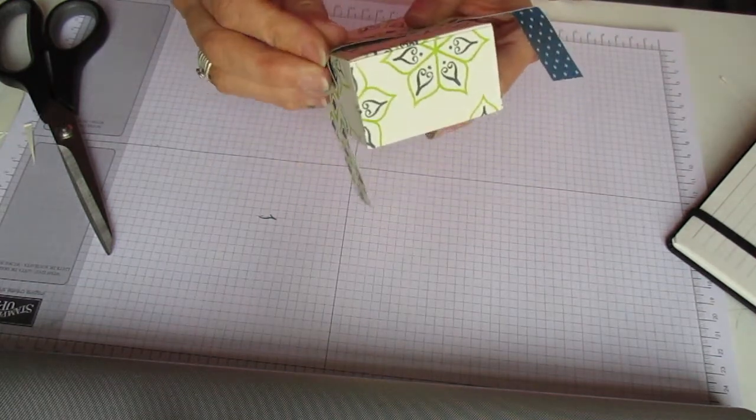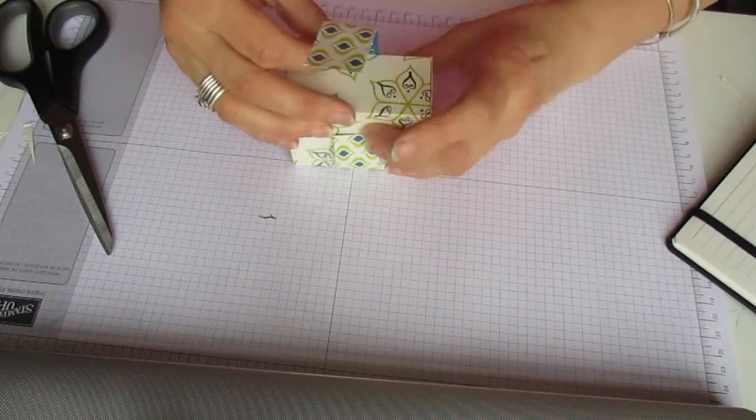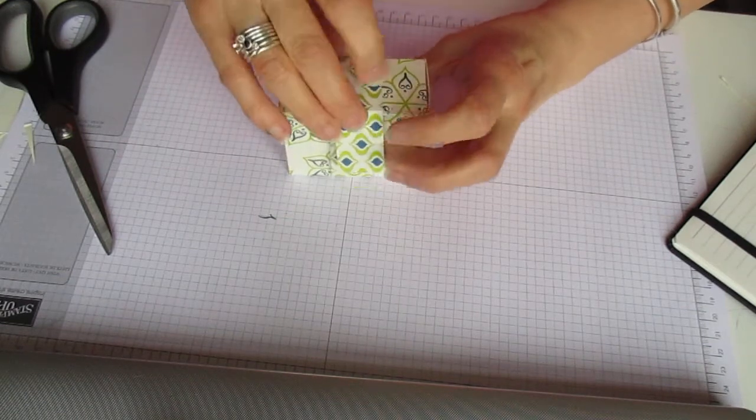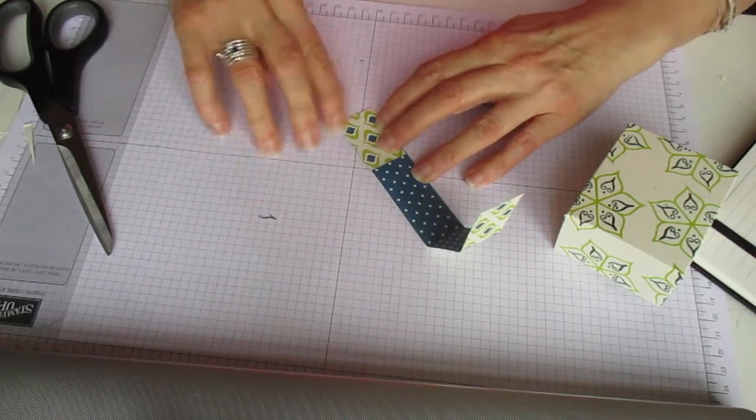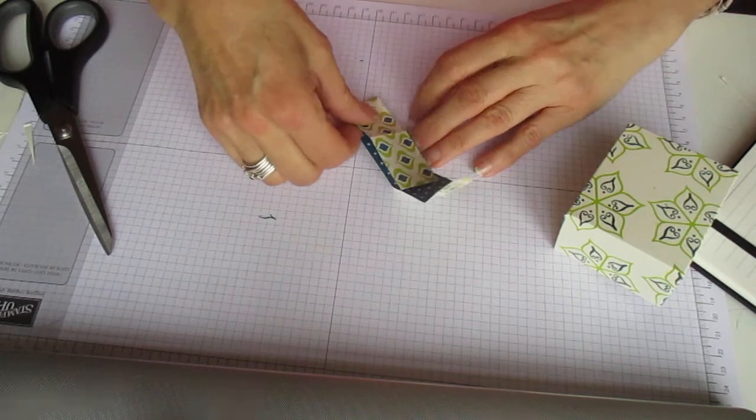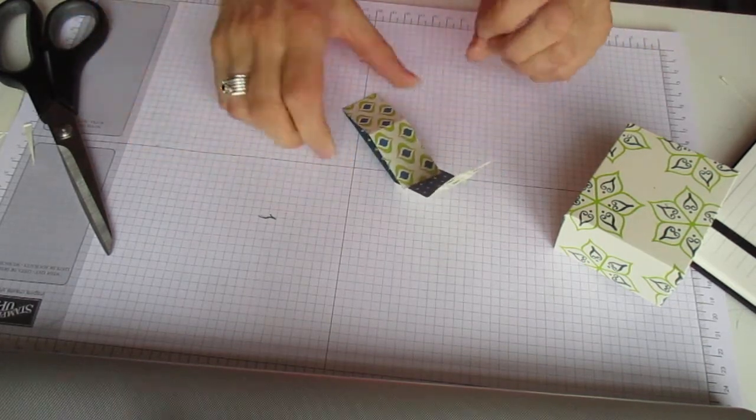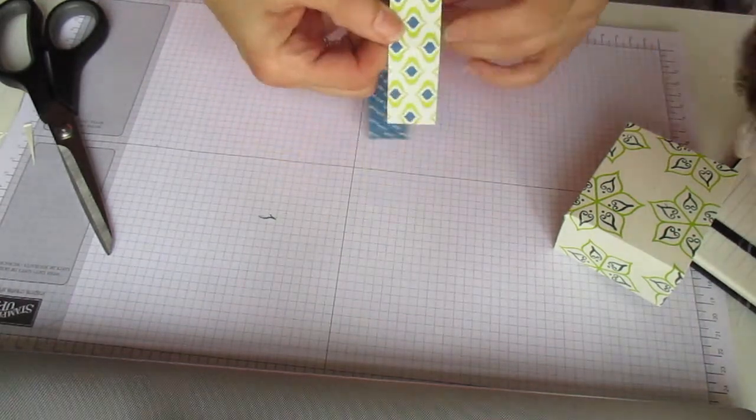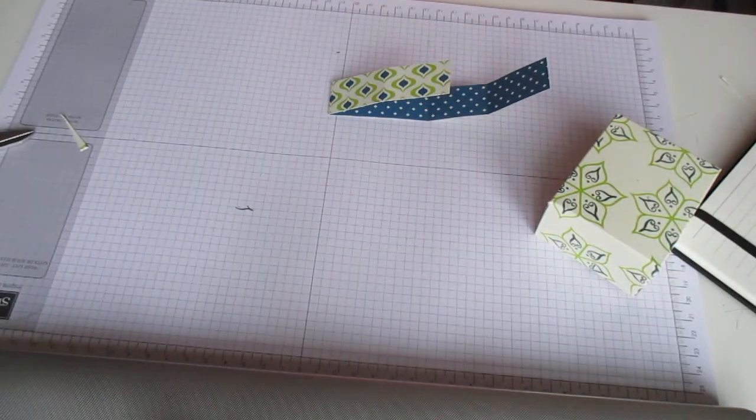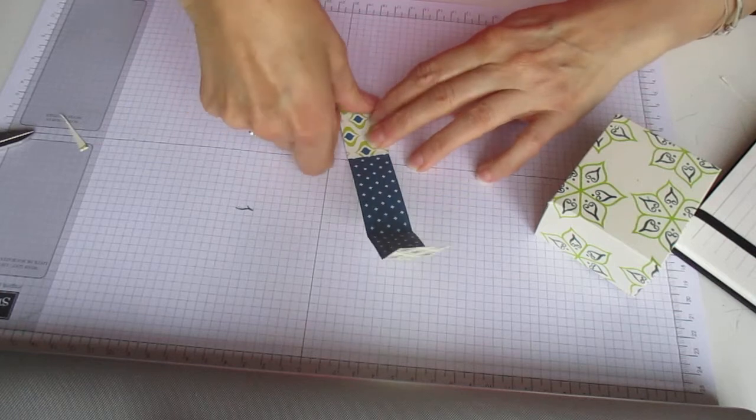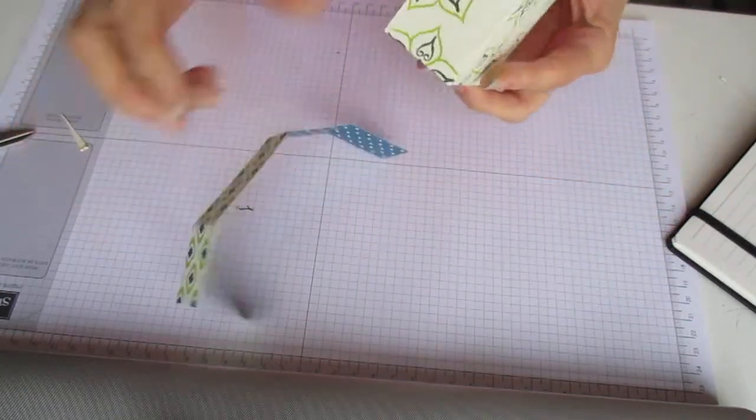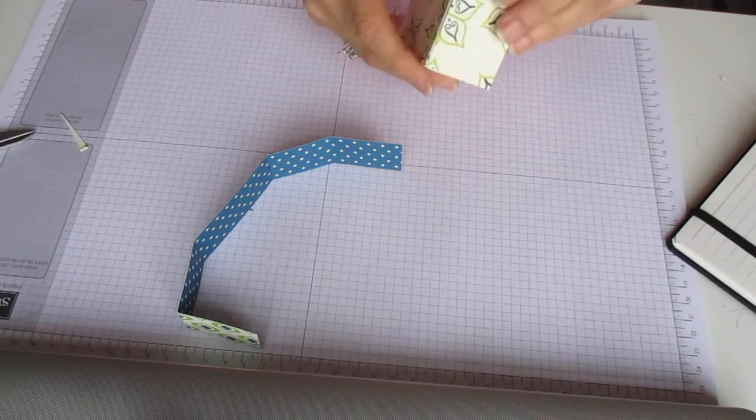I don't burnish this with a burnishing tool. I think with designer series paper, if you're doing a card belly band, you probably would need a burnishing tool, but for DSP it should be alright. I'll put that at the back of my box.